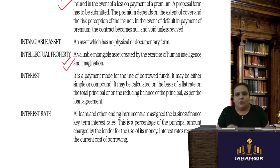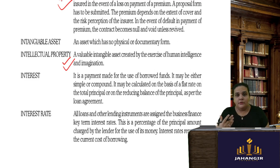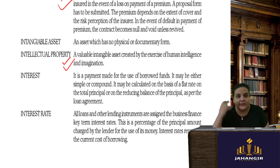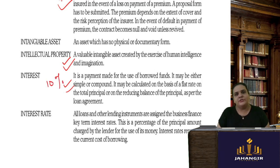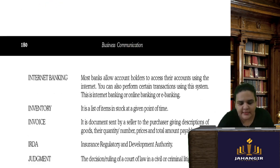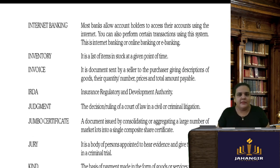Intellectual property includes all properties created by human intelligence — patent, trademark, copyright — not like buildings or furniture. Interest is an additional payment you make for borrowing funds; there is always a coupon rate or interest rate, for example 10 percent.